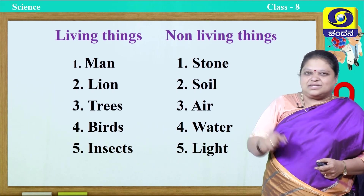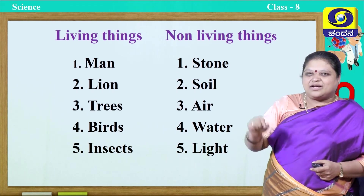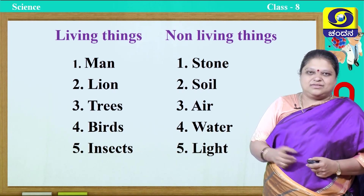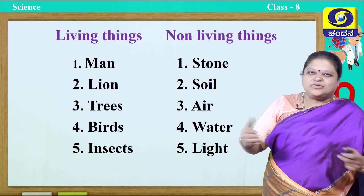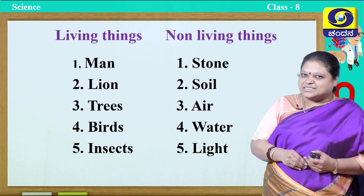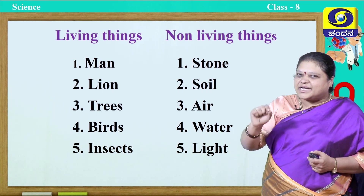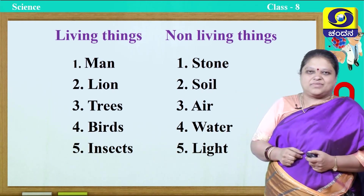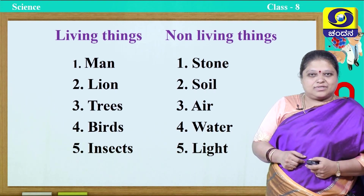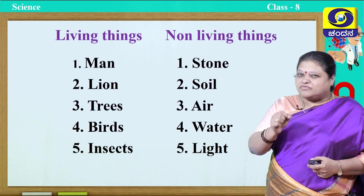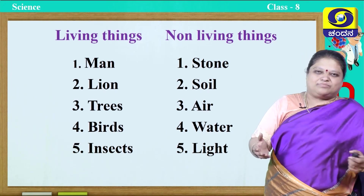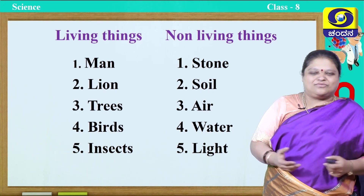In the environment, living and non-living things play a very vital role. They all together survive in nature with a very delicate balance. So if they have to survive, what is the first most basic requirement? You are absolutely right — food.